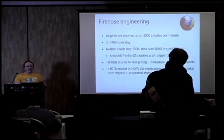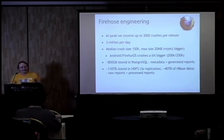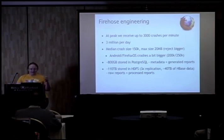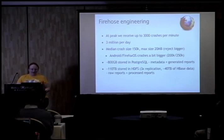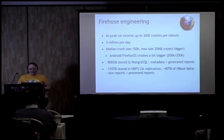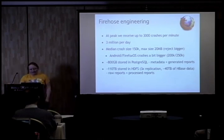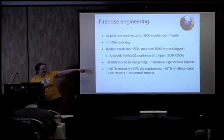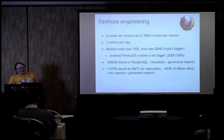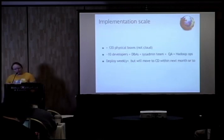The median crash size — a crash is not a small thing — is 150K for desktop. Android crashes are around 200K because Java makes them bigger, and Firefox OS crashes are a little bit bigger again. We store metadata and processed stuff in Postgres — about 0.8 of a terabyte. In HBase we have around 110 terabytes of storage, but it's actually only about 40 terabytes of data because the replication factor is 3. Data ages out at six months. I recently figured out that we process a billion crashes a year.